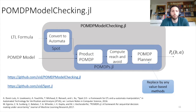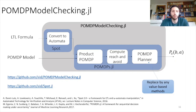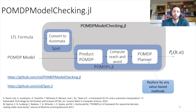As input, given the formula, Spot performs the conversion to an automaton. Then a product POMDP is automatically constructed by taking the product of the original POMDP model provided by the user and the automaton given by Spot. The next step is to define a reachability problem in this product POMDP and then solve it using a POMDP planner — and here again, we can use any planner provided by POMDPs.jl.